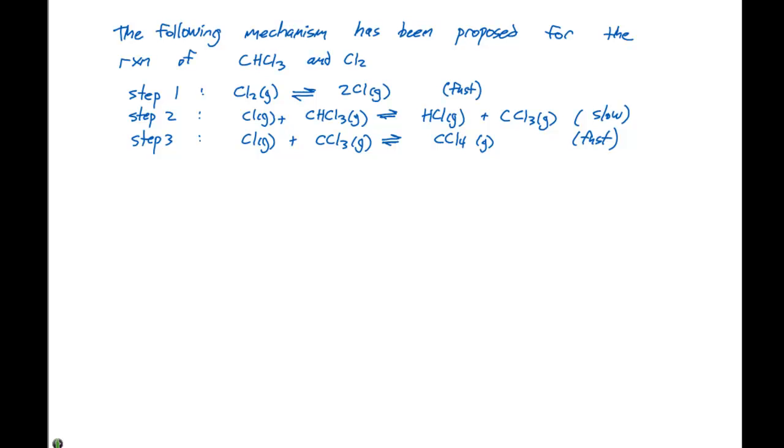And again, this is a fast step. Notice that we have equilibrium arrows here, meaning that there's a forward reaction and a reverse reaction happening at the same time. It's in something called dynamic equilibrium, which we're going to cover in the next chapter.